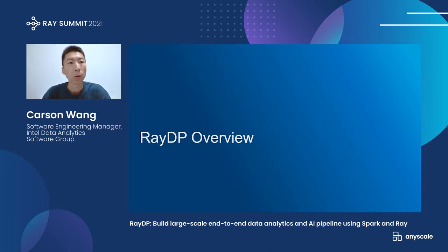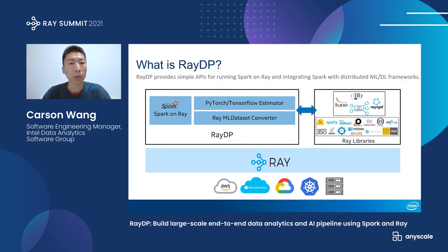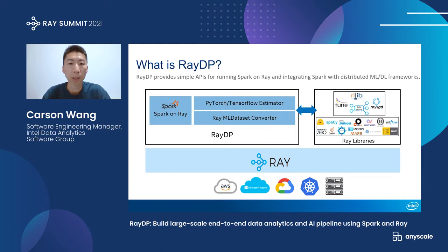Ray is a general-purpose framework that provides simple and universal APIs to build distributed applications. RayCore provides simple APIs like task and actor, but they are powerful enough to build distributed libraries and applications. Today, there are a few built-in libraries in Ray, like RayTune, RLlib, RaySGD, and RayServe. There are also more and more third-party libraries being supported on Ray, like XGBoost and Horovod. For data preprocessing, there are a few options on Ray today, like Modin, Dask, and Mars.